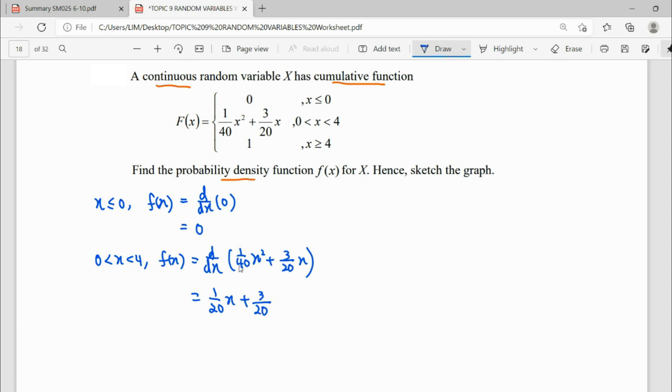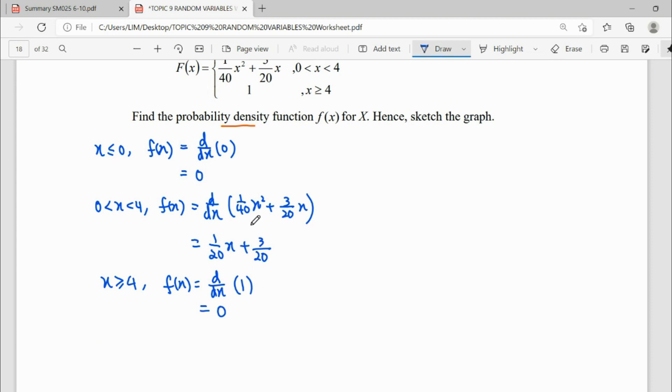Lastly, for the last interval, to find f(x) we're going to differentiate the value of 1. So differentiate a constant, you get zero. So what we need here is the function. We cannot leave the answer like this, this is one by one, one part by one part.